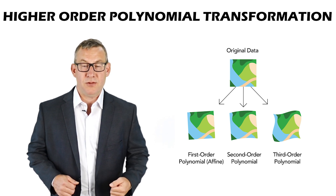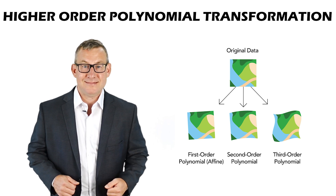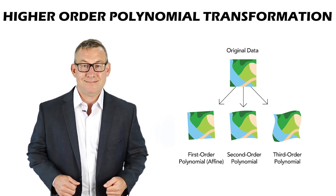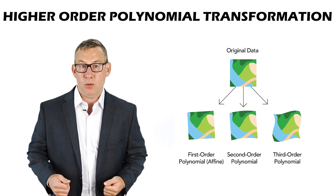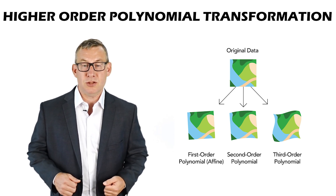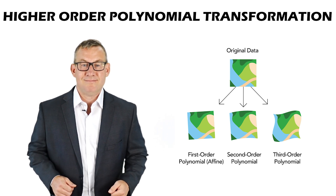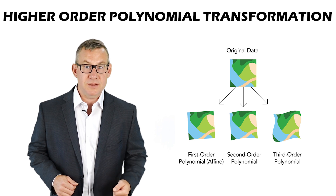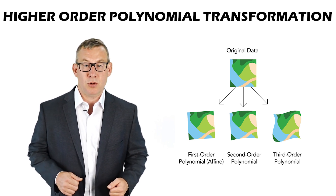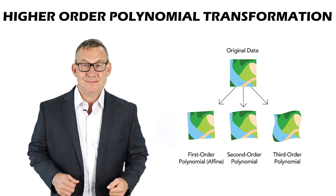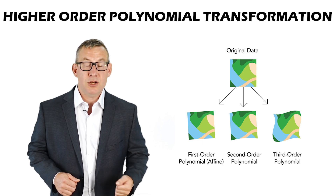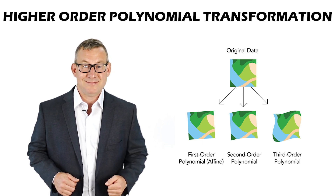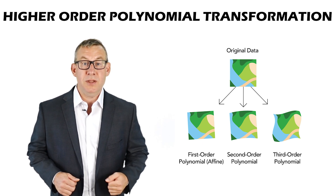Higher-order polynomial transformations are second-order, third-order, etc. They allow more flexibility in warping the surface to fit the control points, but they can deform non-control point areas. The root mean square error will typically be lower for higher-order polynomial transformations, but they can introduce more error in non-control point areas, so the root mean square error should be analyzed with caution and these transformations used carefully.